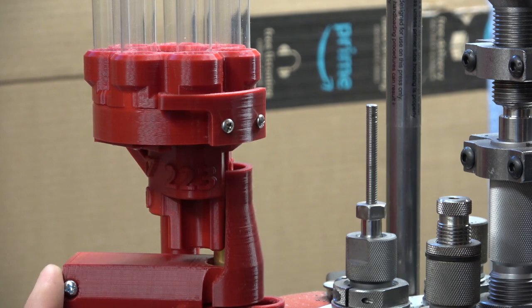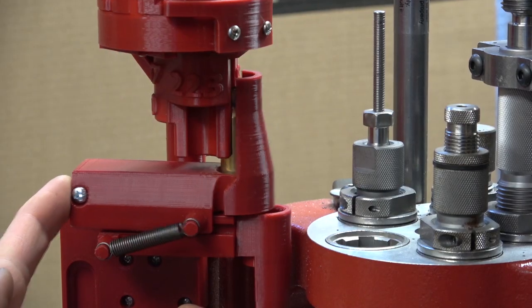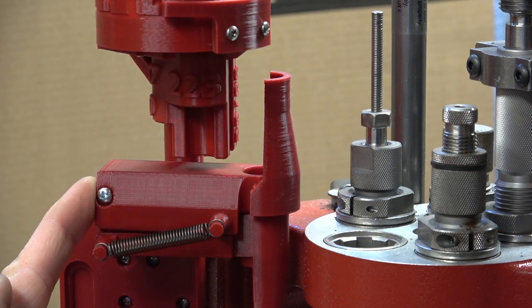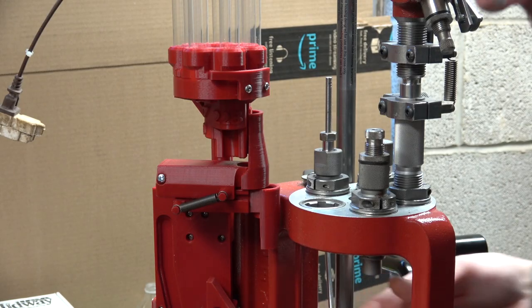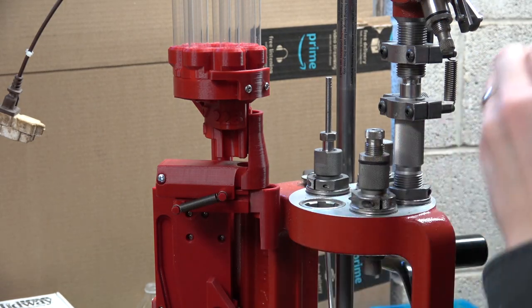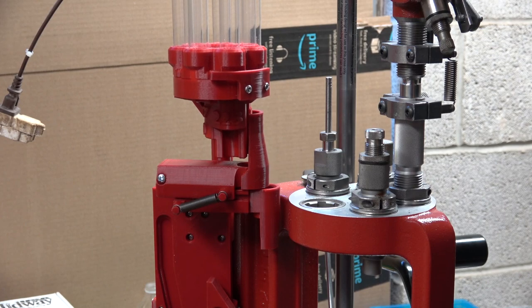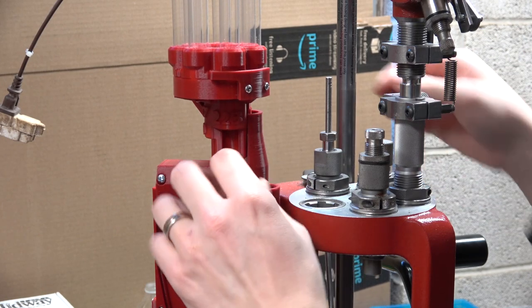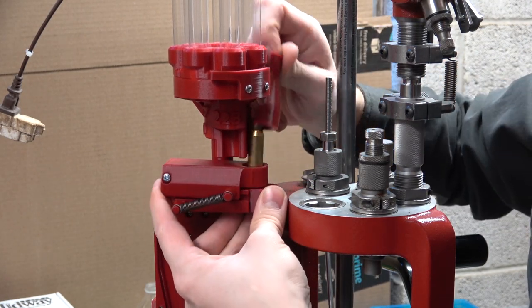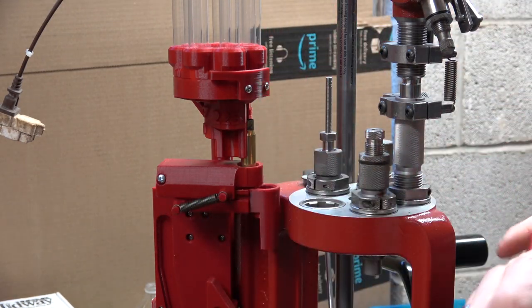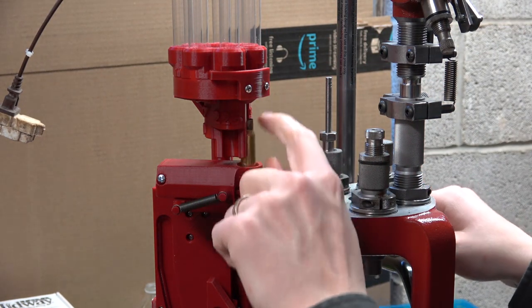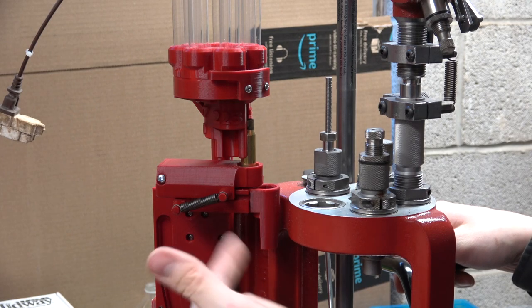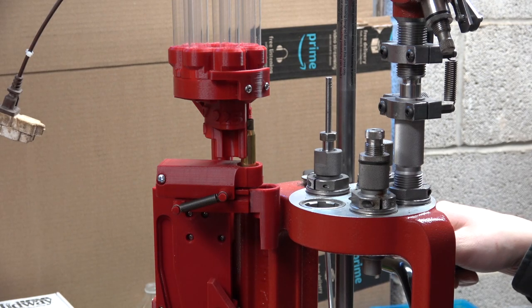So you can see when this is pushed, the case drops down through and onto the ram. Let me show you that from the top. I'm using a, tell you what, I'll take this guard off just to make it easier to see. I'm using the 308 case just to make things really easy to see.